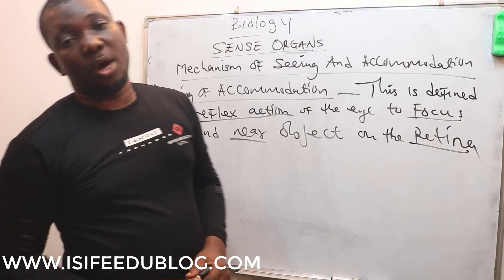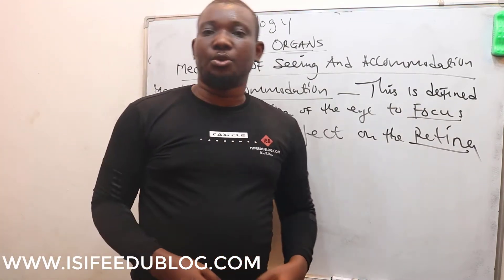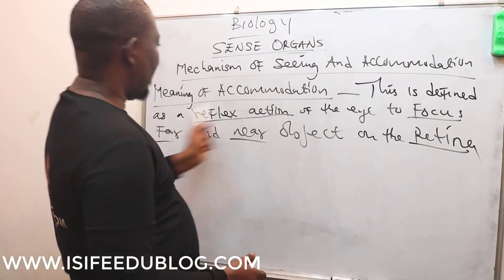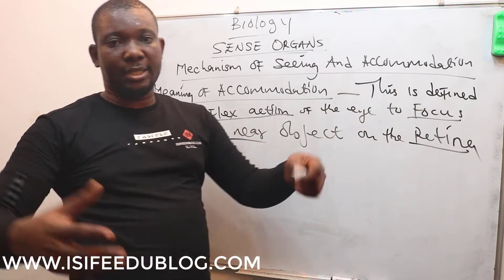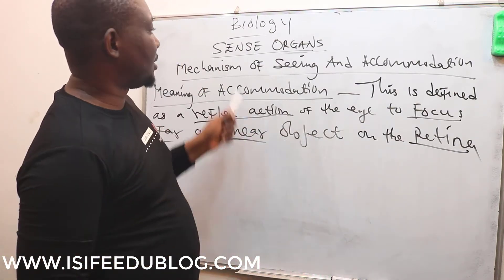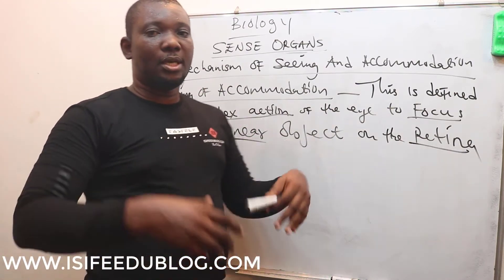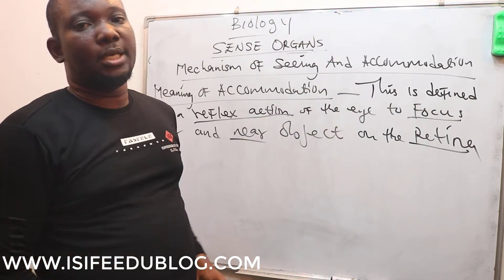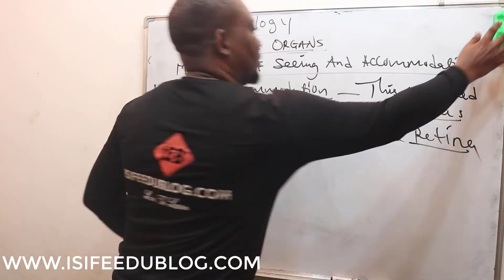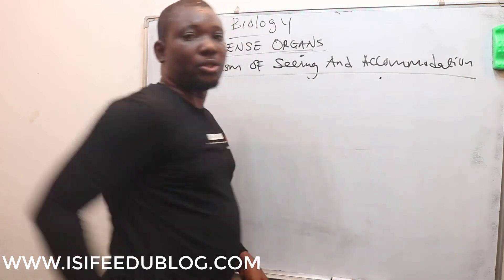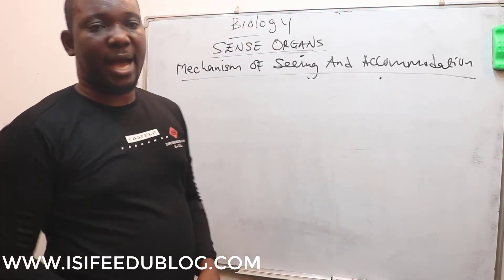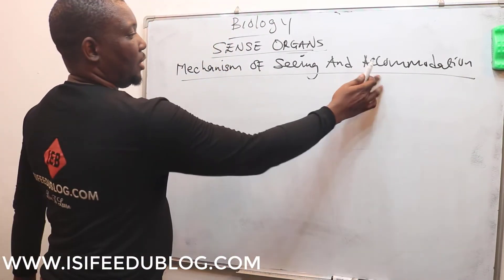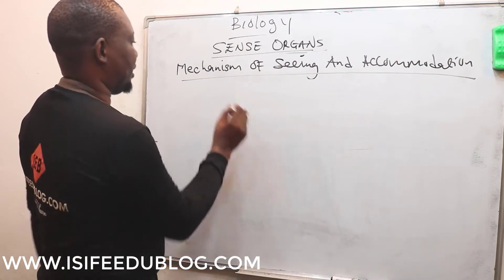We are going to look at what happens during seeing, or what they call the mechanism of seeing, having known what accommodation is. Let's now understand what it entails for someone to see. I would like to take you to the structure of the eye once again to show you what is involved in seeing or sight.